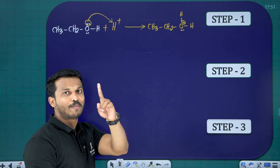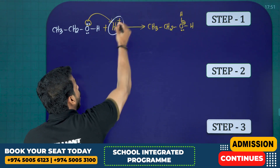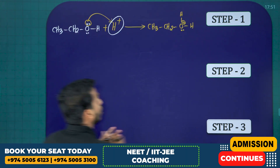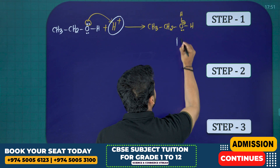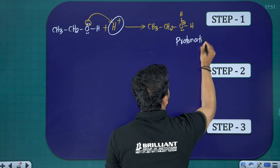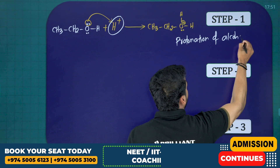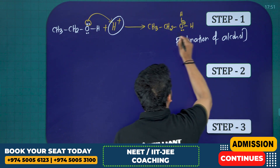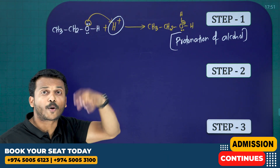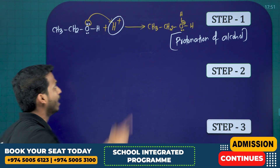What is the name of step number one? Taking a proton — H+ — to the alcohol. This is called protonation of alcohol. The proton gets added to the alcohol. That is step number one: protonation of alcohol.